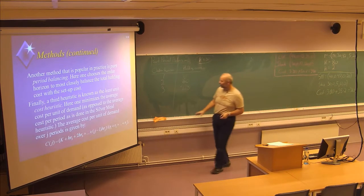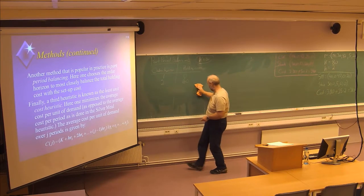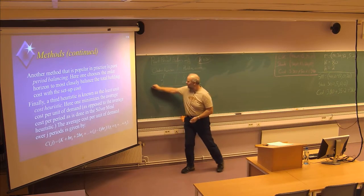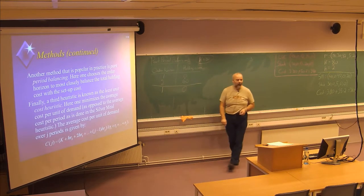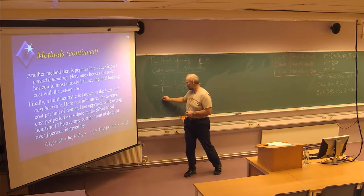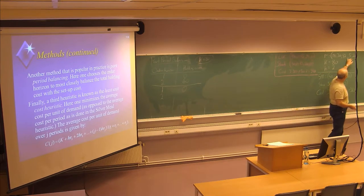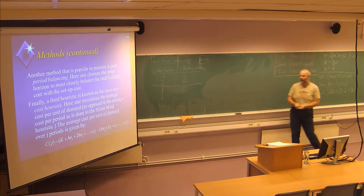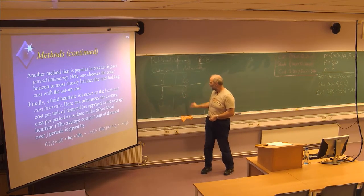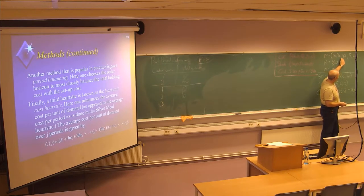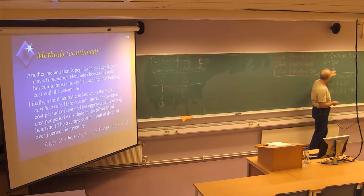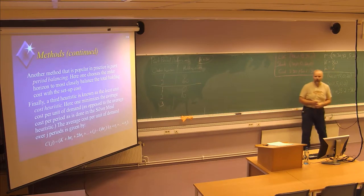And then we start all over again from period number three. From period three: order horizon of one gives no holding cost. Order horizon of two means producing 42 plus 5, storing 5 in one period at a cost of 2, a total holding cost of 10. An order horizon of three means producing 67 items, storing 5 in one period at a cost of 2 and 20 in two periods at a cost of 2. So 20 × 2 × 2 plus 5 × 2 gives 90.